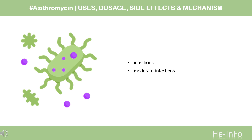Azithromycin should be used only to treat or prevent infections that are proven or strongly suspected to be caused by susceptible bacteria, in order to prevent the development of antimicrobial resistance and maintain the efficacy of azithromycin. It is indicated for the treatment of patients with mild to moderate infections caused by susceptible strains of the microorganisms listed in the specific conditions below. Refer to the FDA label and indications section for detailed information.